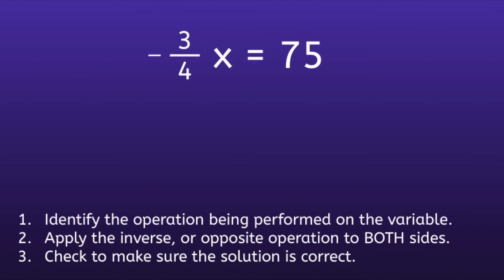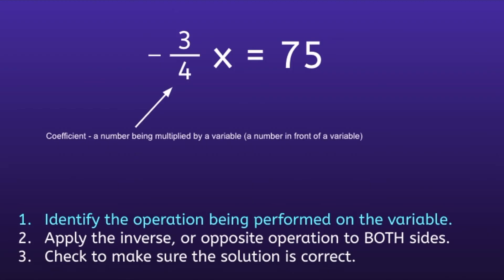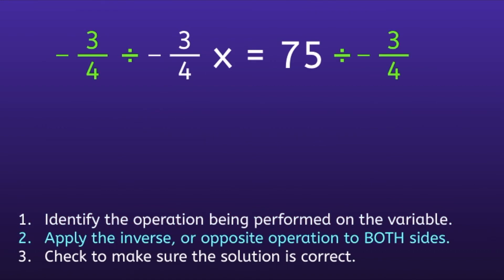Example number 2: negative 3 fourths x is equal to 75. Step 1: identify the operation being performed on the variable. Our variable is x, and the coefficient is negative 3 fourths, which means we are multiplying negative 3 fourths times x. So we want to do the opposite — divide by negative 3 fourths — on both sides. As we learned, when dividing fractions the two steps are change and then flip.